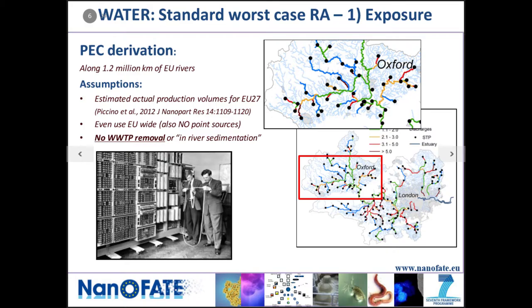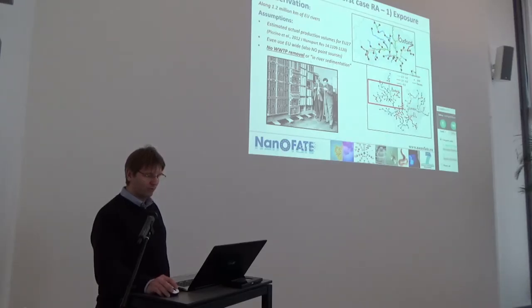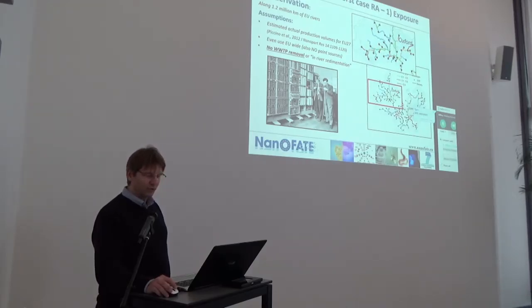We estimated annual production from a published paper — you could use any paper or multiply by 10, it doesn't matter, but you need a number to start with. We assumed even use by all people in Europe, no industrial point sources — everything goes into hair lotion or whatever product, and every person uses the same amount. To make it worst case for water, we assumed nothing is removed in the sewage works, then plotted where sewage works are and how much river water there is to dilute it, giving concentration maps for each river stretch across Europe.